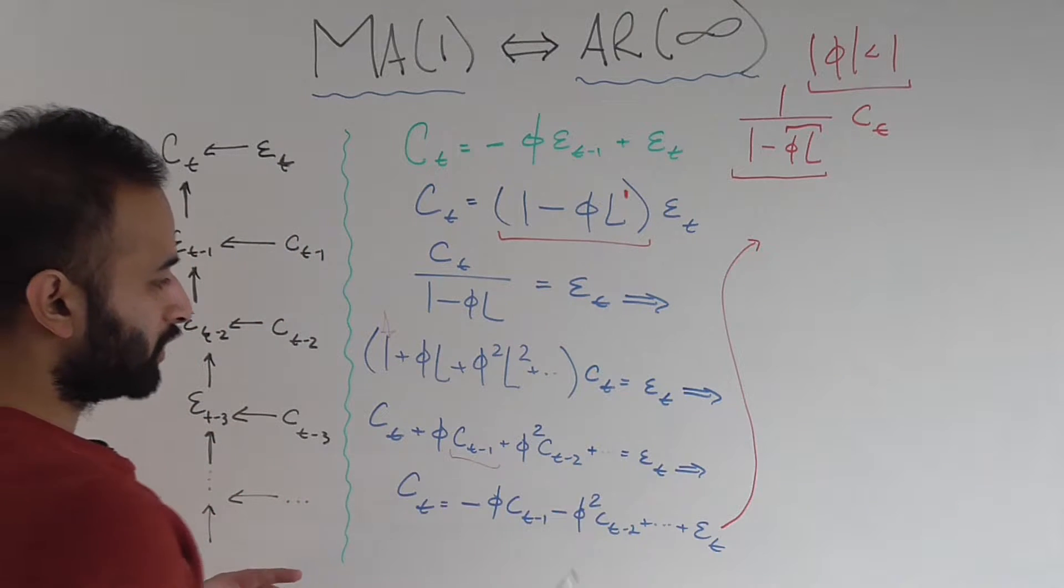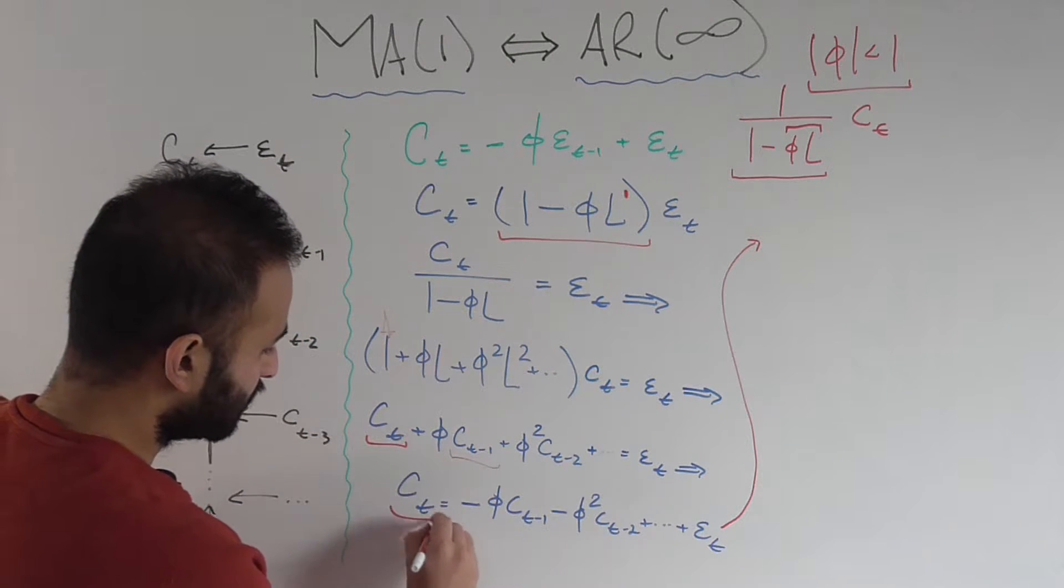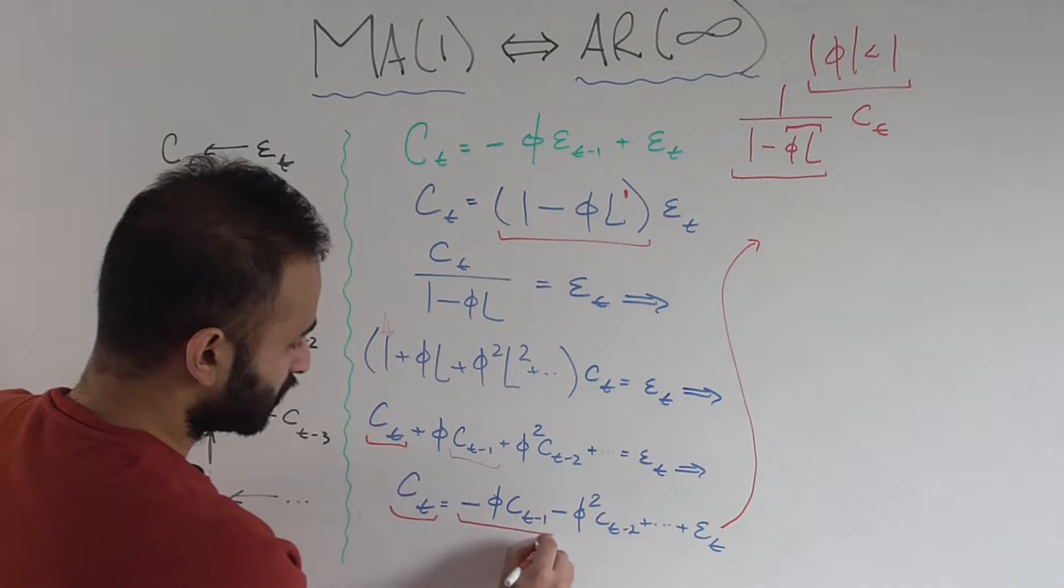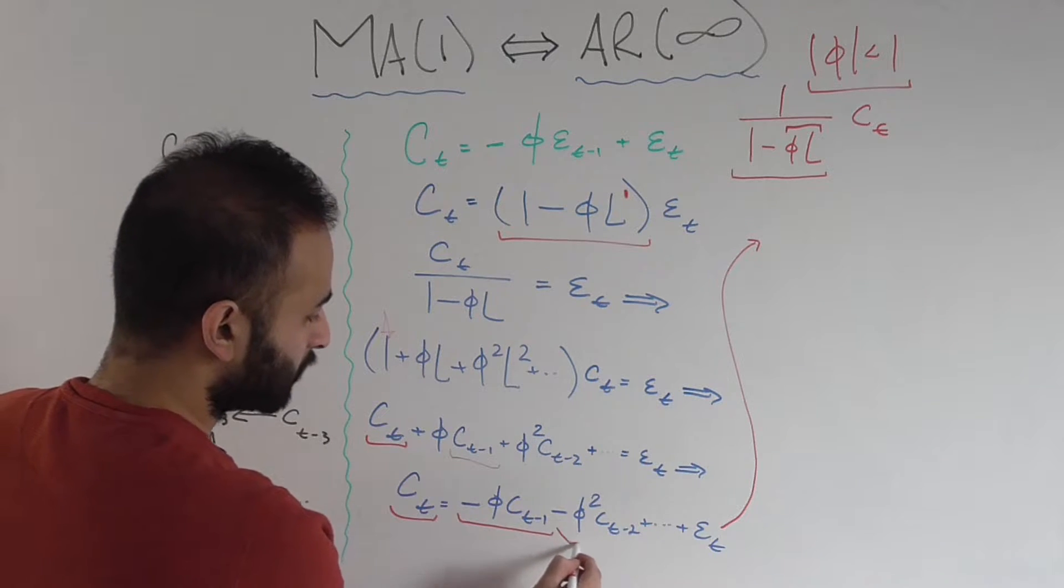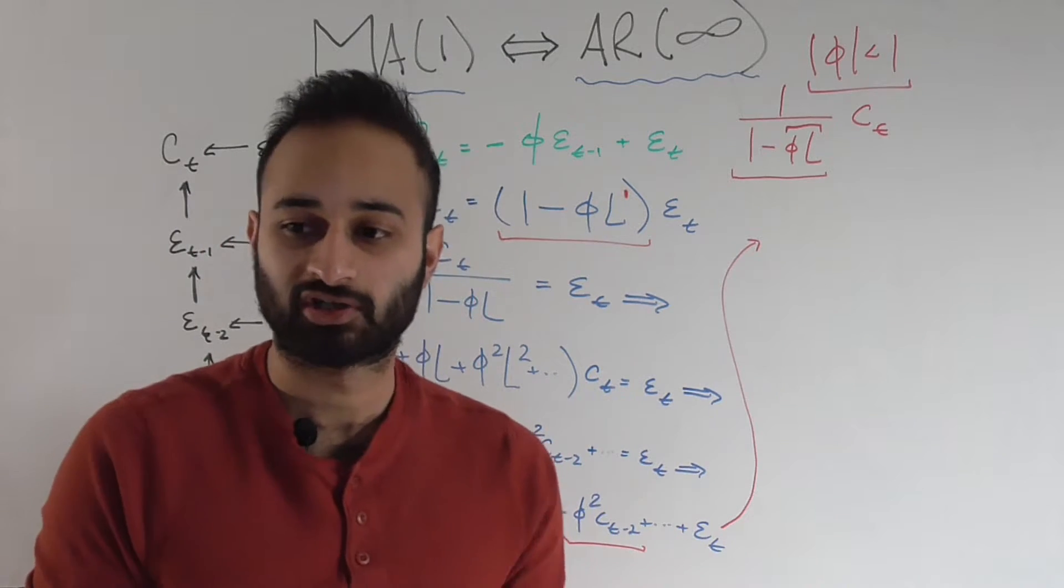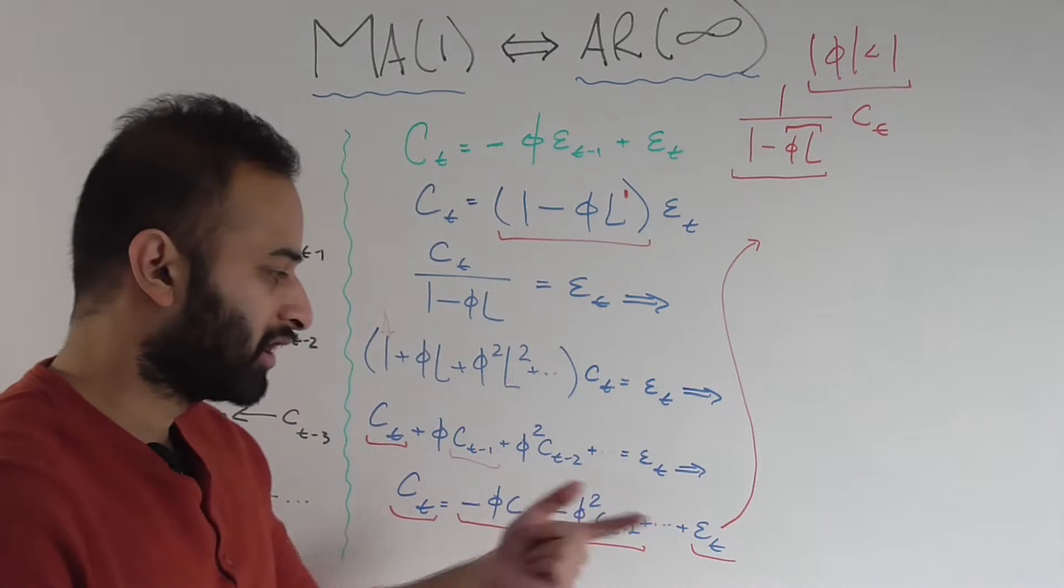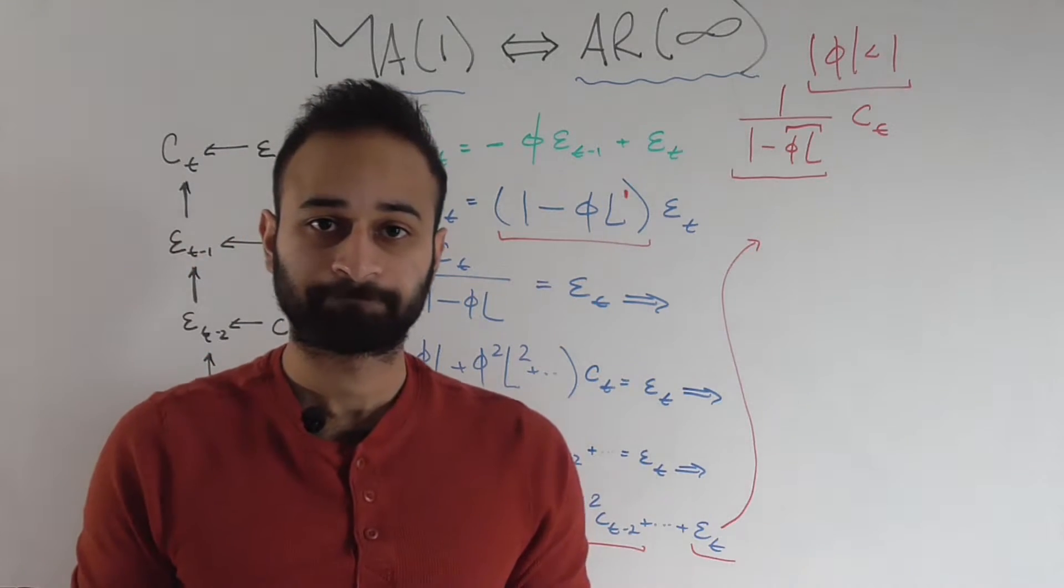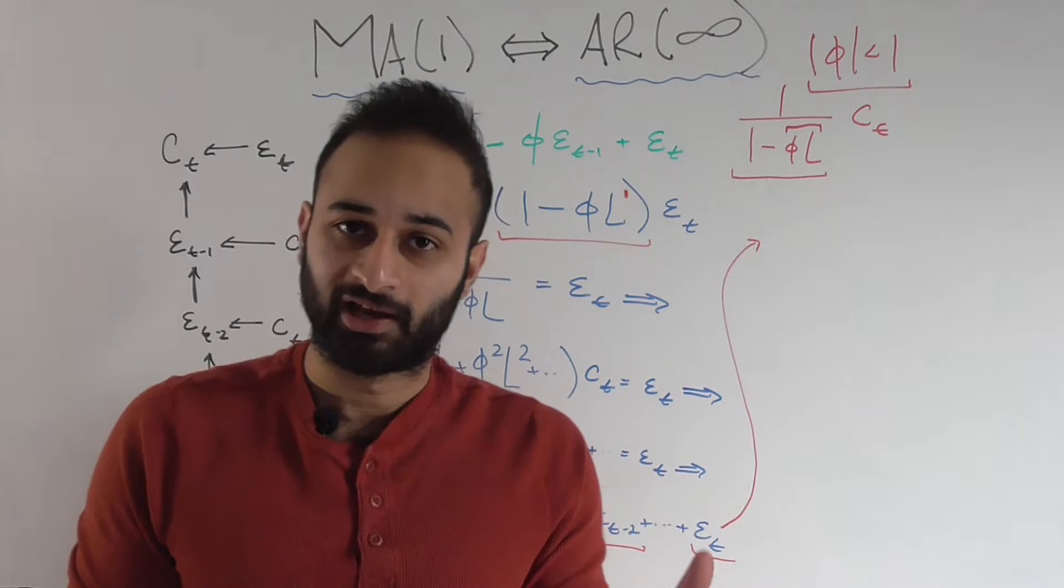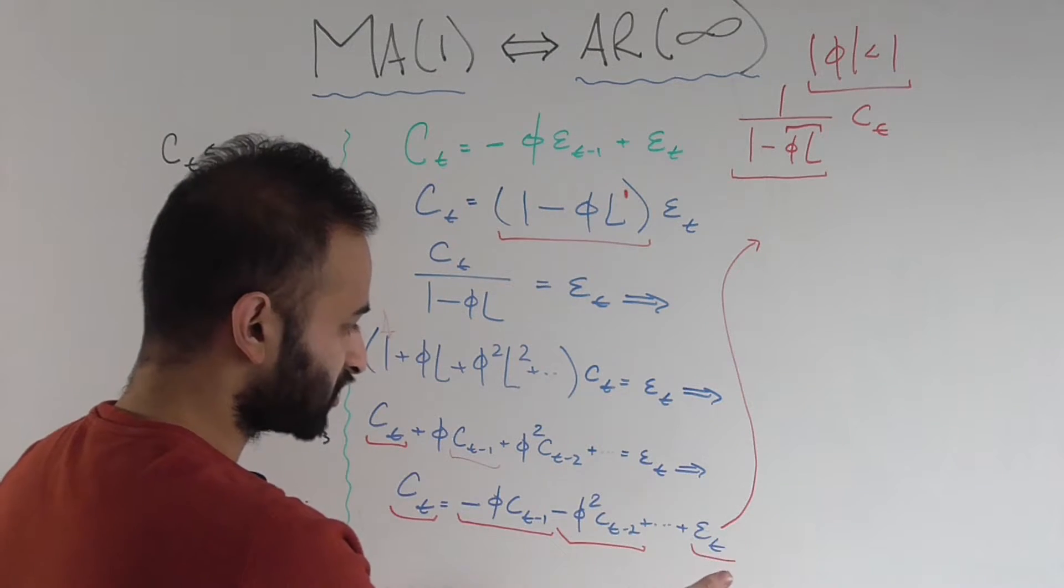The last thing I'm going to do is move everything over to the right-hand side except C sub T. So I have C sub T is equal to some coefficient times C sub T minus 1, some coefficient times C sub T minus 2, another coefficient times C sub T minus 3, and it's just going to go on forever. And then I have also the random error or innovation from today. Okay, it looks like I made everything really complicated, because I went from this really nice elegant little equation into this giant massive mess, right?